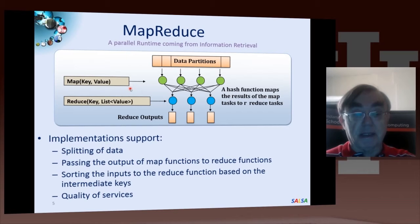So these implementations, especially Hadoop, support splitting the data, taking the data and giving it to map functions, taking the map functions and giving them to the reduce function, taking the input to the reduce functions and sorting them, and also various quality of service to get the answer in a good time. Because if this was information retrieval, the user wants the answer in a tenth of a second or so.